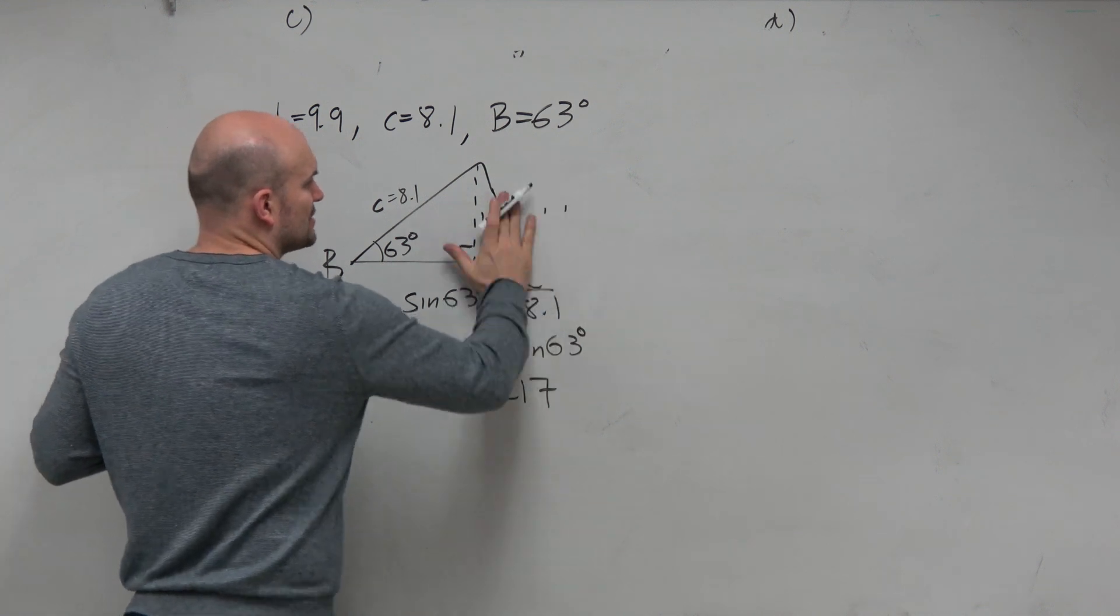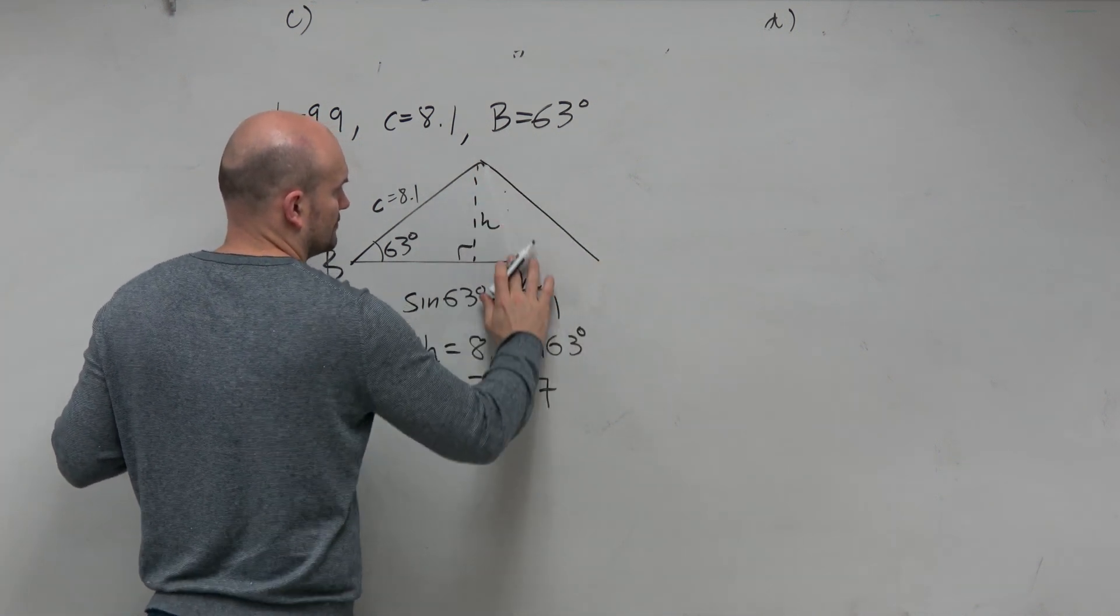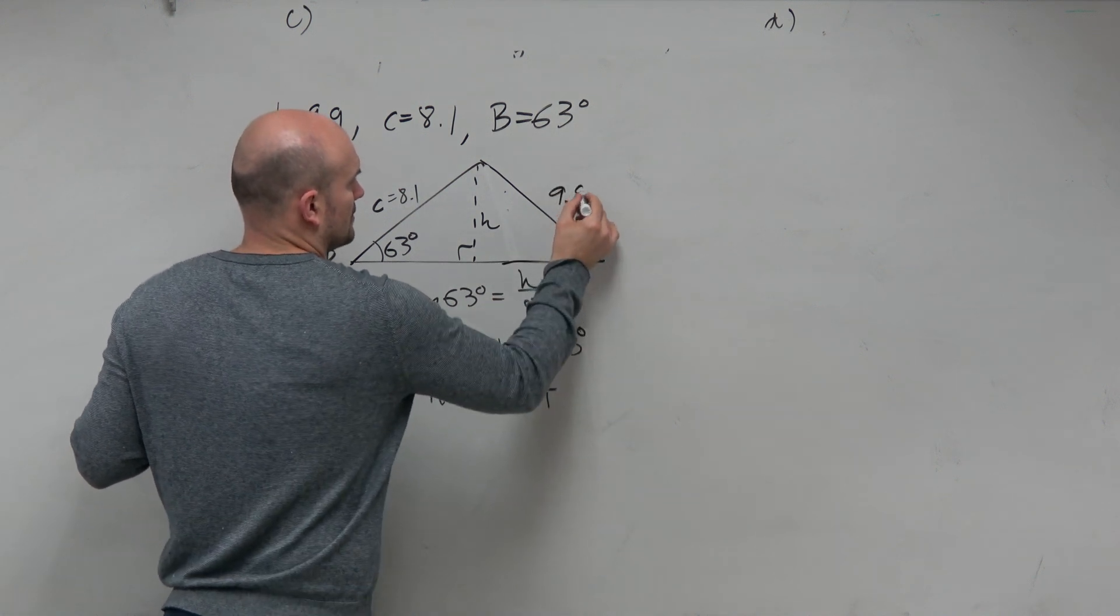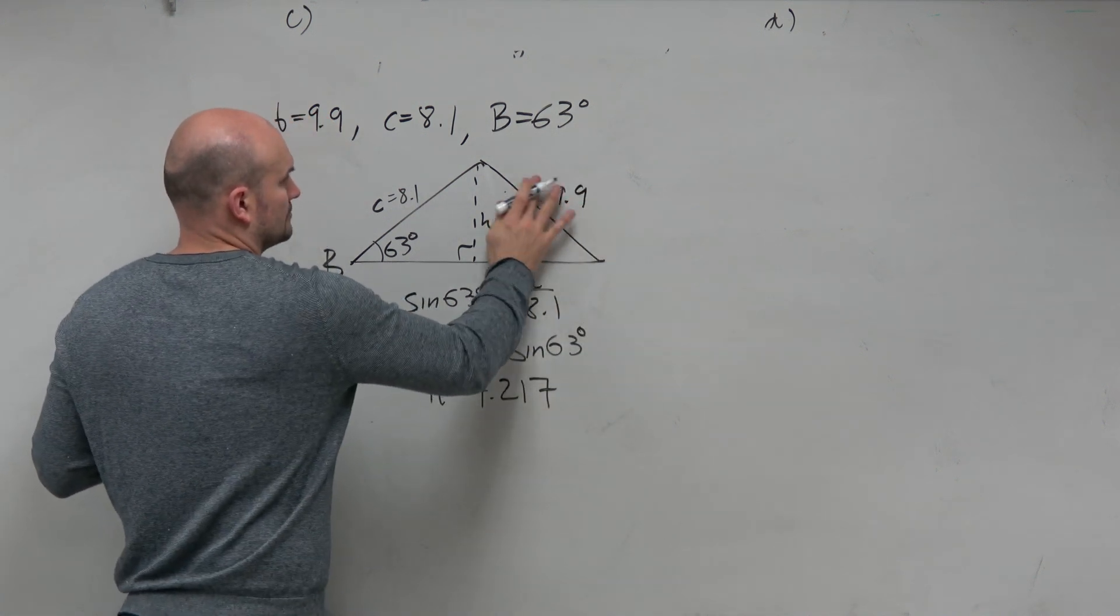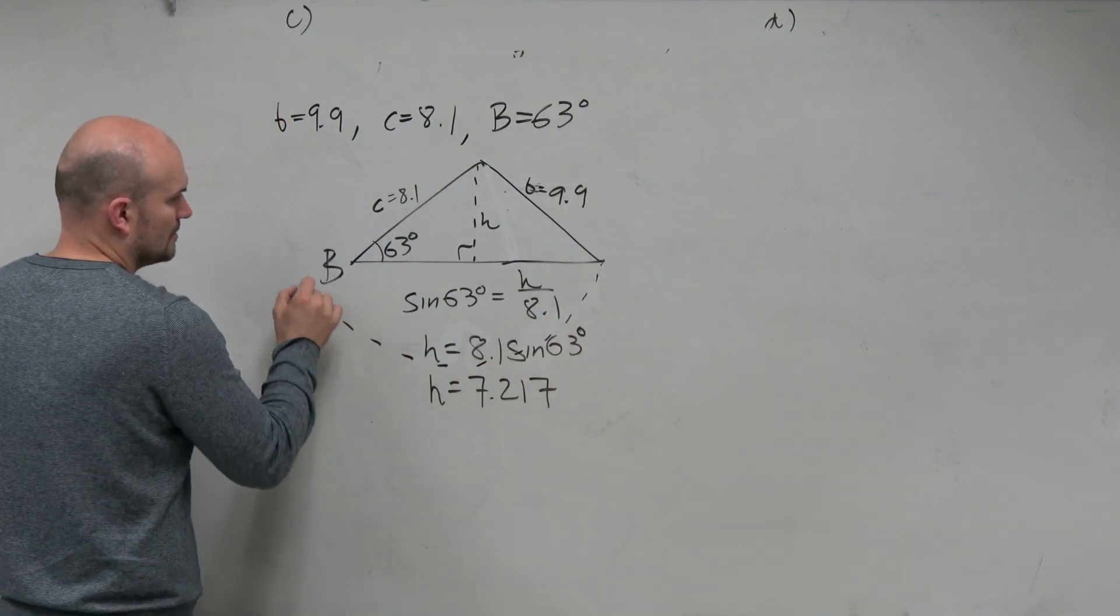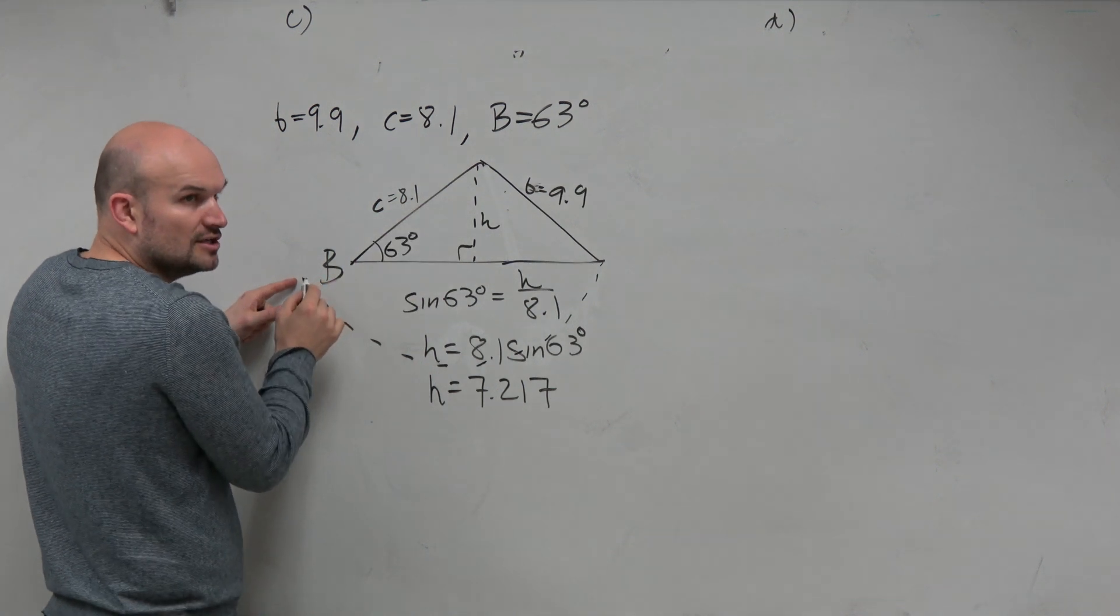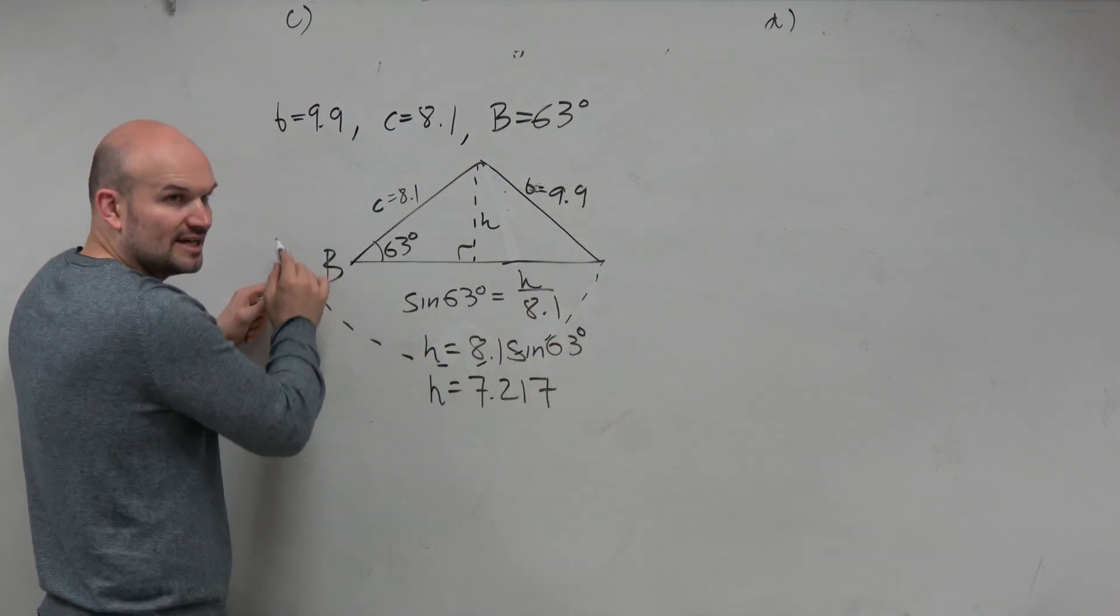when I rotate this around - and again, my triangle's kind of bad - when I rotate this triangle around, if this is 8.1, then 9.9 is farther. Do you see how there's no second triangle that can exist?